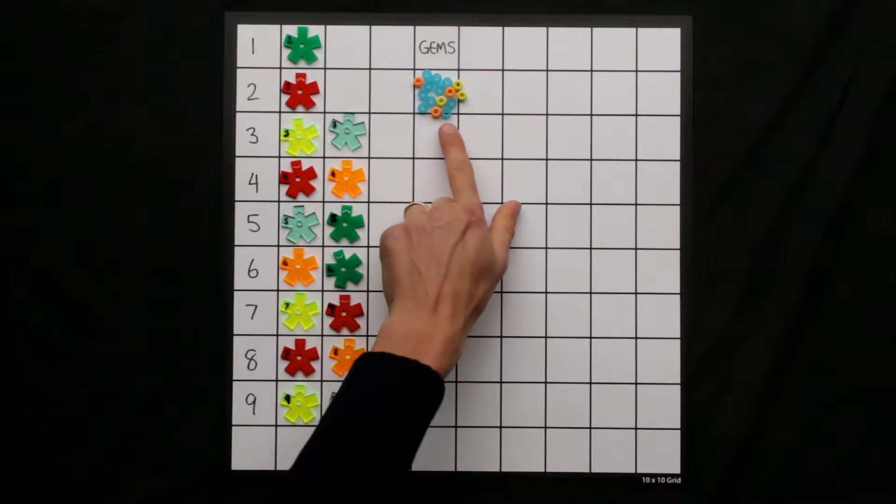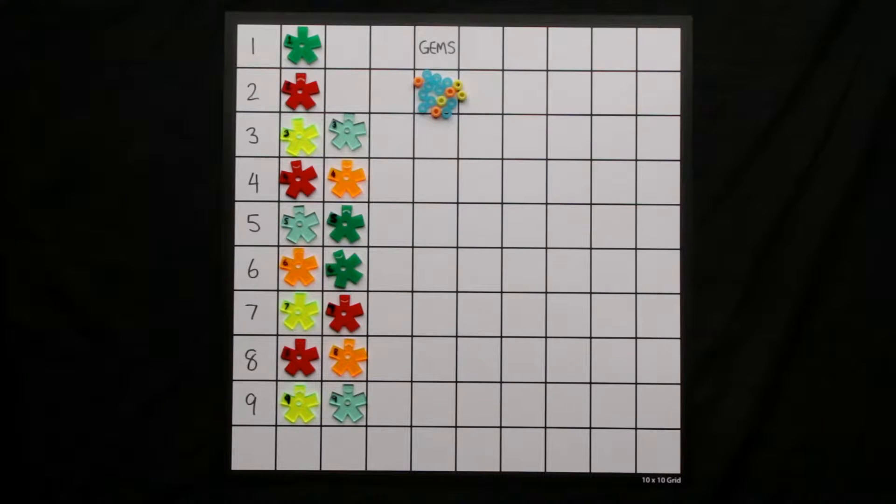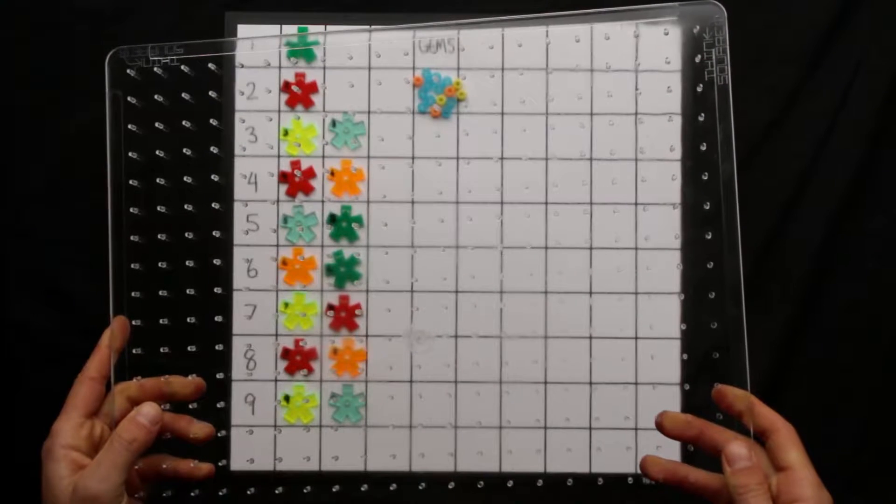You'll also need 16 gems and the ThinkSquare overlay, which we'll set it up on now.